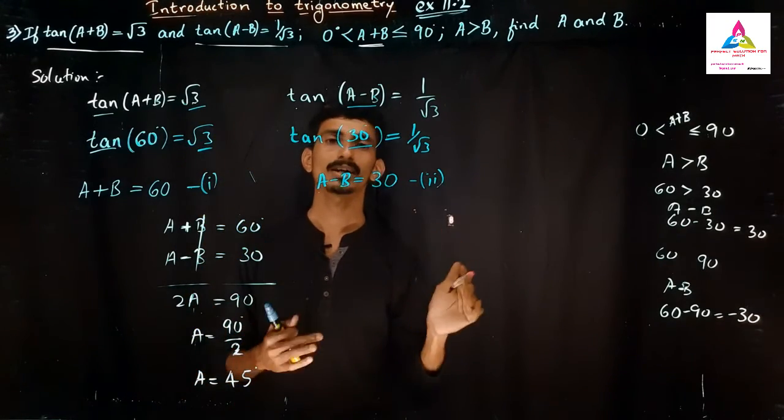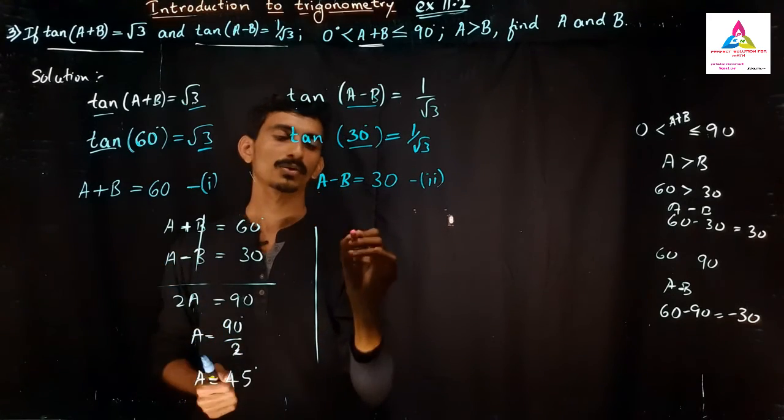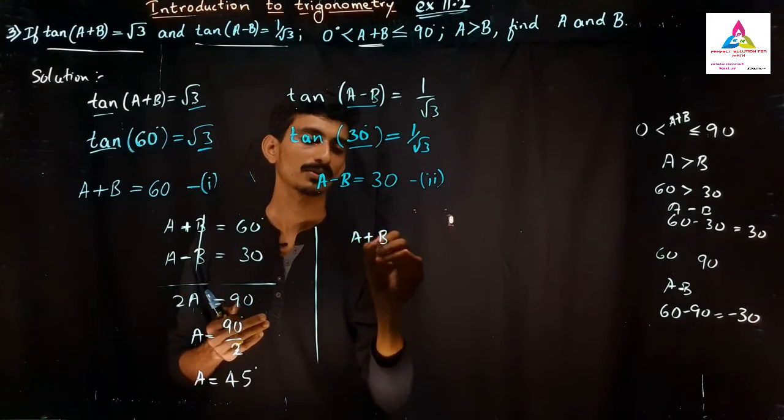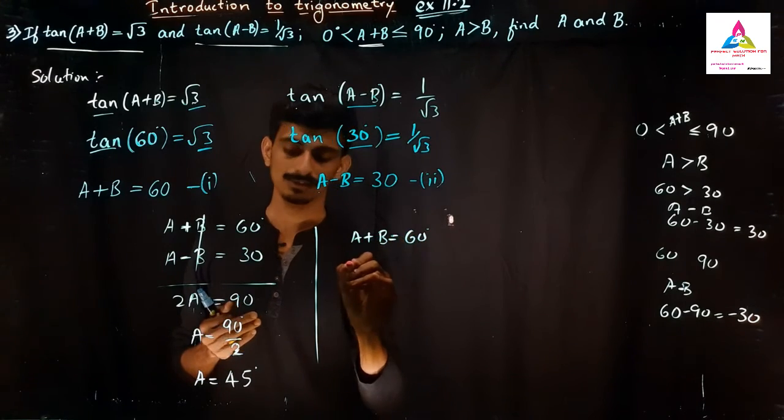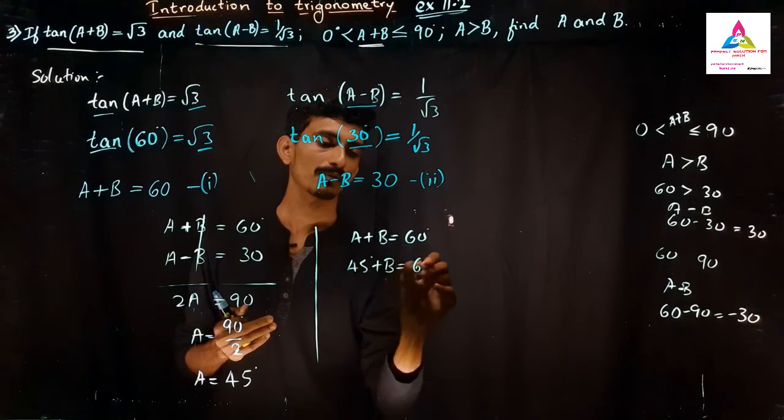Now we have to find the B value. So substitute this A value in any one of this equation. So I will substitute in A+B that is equal to 60 degrees we have. So A value is 45 degrees we got, and the B value we don't know. So we will find that B angle.